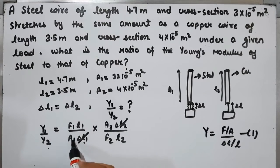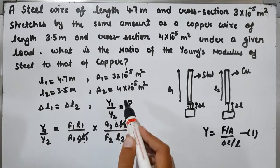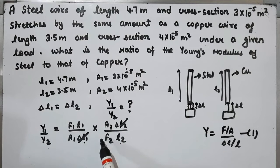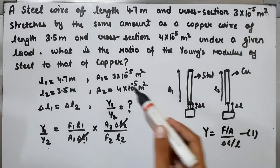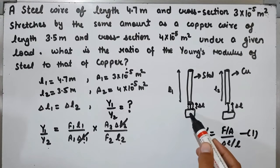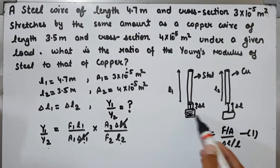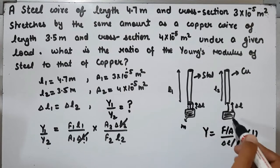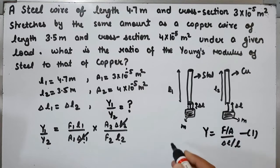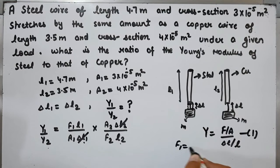Values of L1, A1, A2, and L2 are given, but F1 and F2 are not. Notice that it says 'under a given load' - the load attached to both wires is the same. This means F1 = F2.